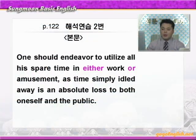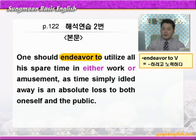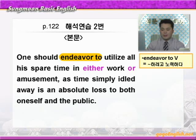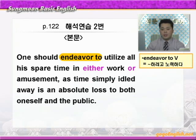그럼 같이 해석해 보겠습니다. 'one should endeavor to utilize.' 여기 one은 일반적인 사람을 나타내죠. endeavor to에 동그라미 쳐보세요. 'endeavor to 부정사' 하면 '뭐뭐 하려고 애쓰다, 노력하다' 이런 뜻이죠. utilize는 이용하다 이런 뜻이니까, 사람은 뭐뭐를 이용하도록 노력해야 한다. 'all his spare time.' spare가 여분의, 남겨놓은 이런 뜻이니까 spare time은 여가 시간이 되겠죠. 자기의 모든 여가 시간을 이용하도록 노력해야 한다.